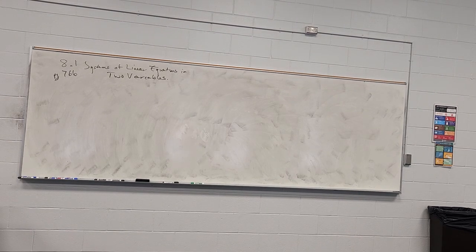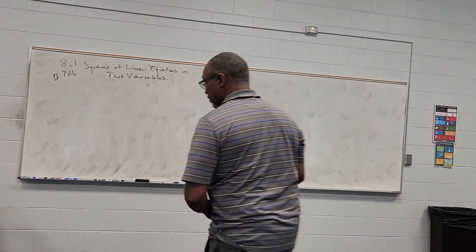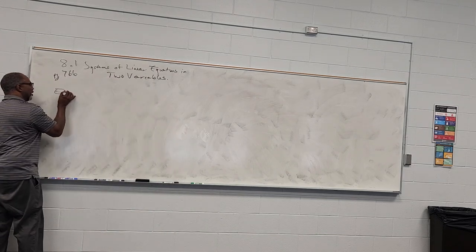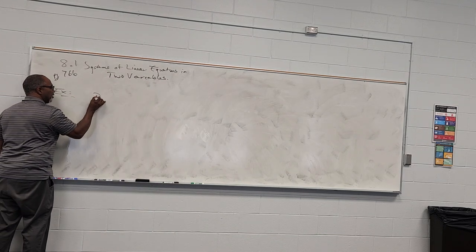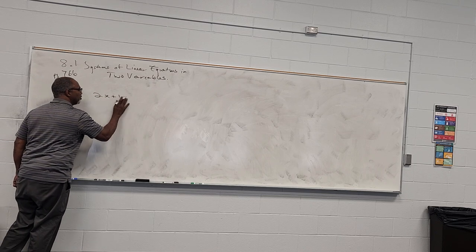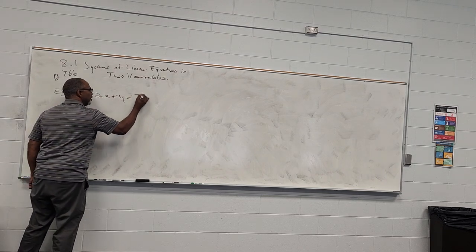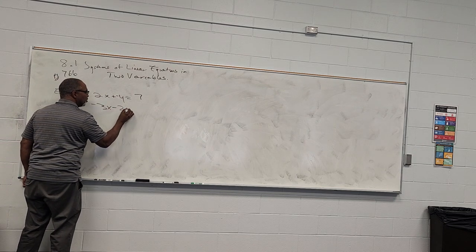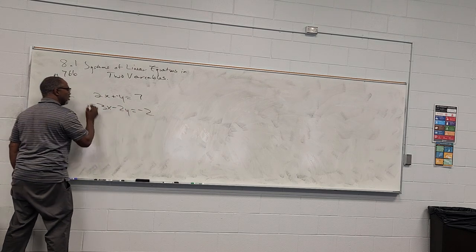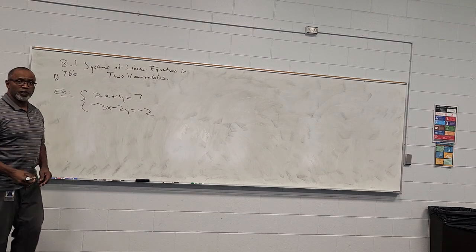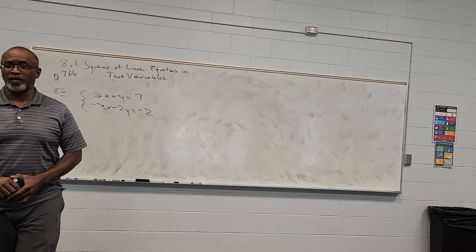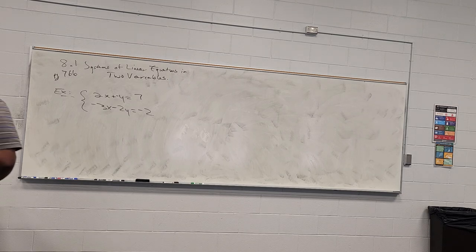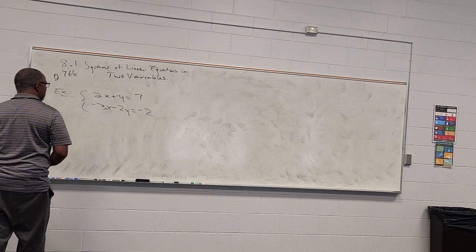We are going to learn what systems of linear equations are and how to solve them. An example might be 2x plus y equals 7, and negative 3x minus 2y equals negative 2. Those two equations with two unknowns x and y comprise a system of two equations with two unknowns. This is what we are going to learn how to solve.